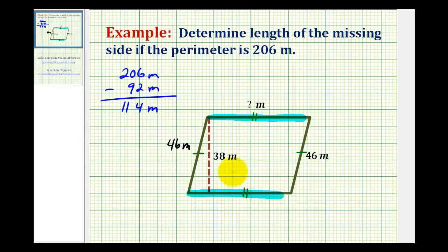But since we know they have the same length, we can take this length and divide it by 2 to determine the length of one of the sides. So 114 meters divided by 2 would be equal to 57 meters, which would be the length of the missing side. 57 meters here as well as down here.